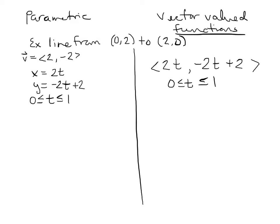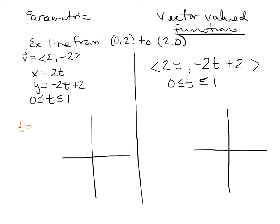Now here's the difference behind the scenes — it happens graphically. I'm going to graph both. For the parametric equations, I'll trace as time moves on: at t equals 0, x is 0 and y is 2, which is expected since the line starts at (0, 2). So that point is right up there where y equals 2.